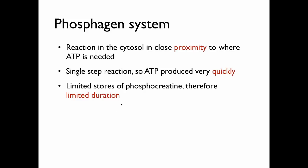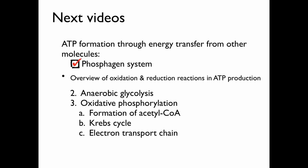One of the unfortunate things is that we have very limited stores of phosphocreatine or creatine phosphate, so this pathway is not going to last very long producing ATP — but it's going to be quick, it's going to be close to where it's needed, but limited in duration. We're going to be covering a few of the ATP forming pathways. This one today was the phosphagen system, and further videos will cover anaerobic glycolysis and oxidative phosphorylation. Please make sure to review the video on oxidation and reduction reactions in ATP production before watching those videos. Thanks for watching.